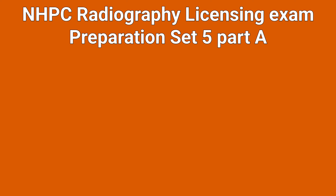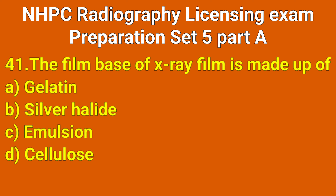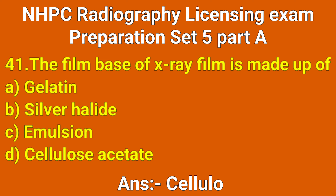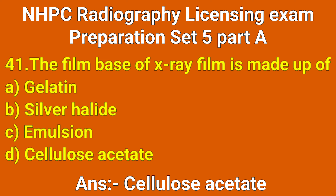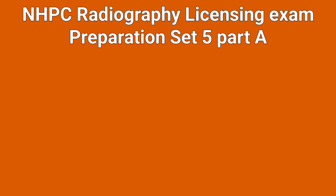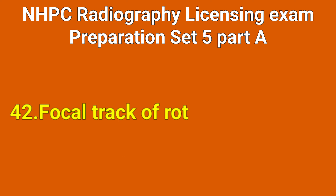Question number 41: The film base of X-ray film is made up of which option? Correct answer: option D, cellulose acetate. Question number 42: The focal track of a rotating anode is which option? Correct answer: option D, circular.